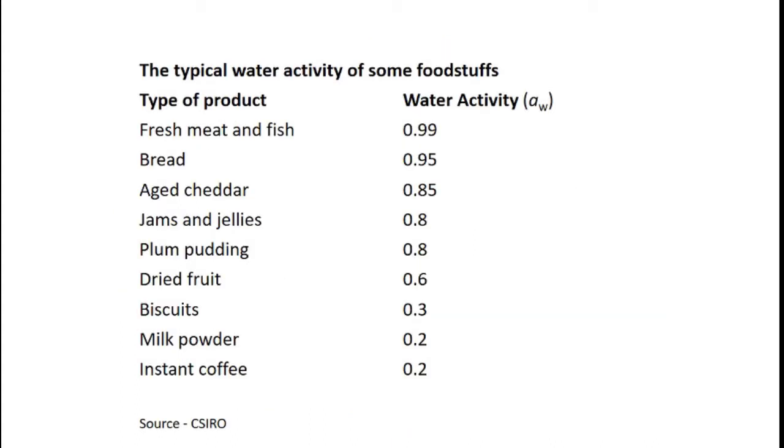Typical water activities that we see in foods—fresh meats and fish are pushing really high close to that theoretical water activity of water itself. Most bread when it's fresh has a high water activity and think about the shelf life of many of these products. We're pushing lower and lower in the less likelihood of these products to be spoiling on their own.